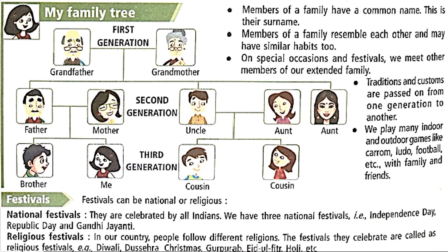Members of a family have a common name — that is their surname. Your surname is the same as your father's surname. Members of a family resemble each other and may have similar habits too, because they have been living together. On special occasions and festivals, we meet other members of our extended family. Traditions and customs are passed on from one generation to another. We play many indoor and outdoor games like carom, ludo, football, etc. with family and friends.